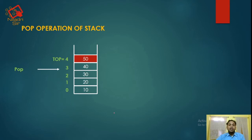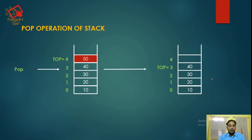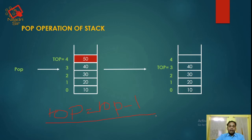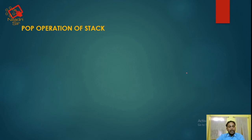We cannot perform the POP operation on any element that is not the topmost element. So, if we delete 50 first, then we can perform the POP operation on 40. We have performed the POP operation on 50. After performing the POP operation, the value of top is decremented by 1 — top equals top minus 1. So the value of top is now 3.